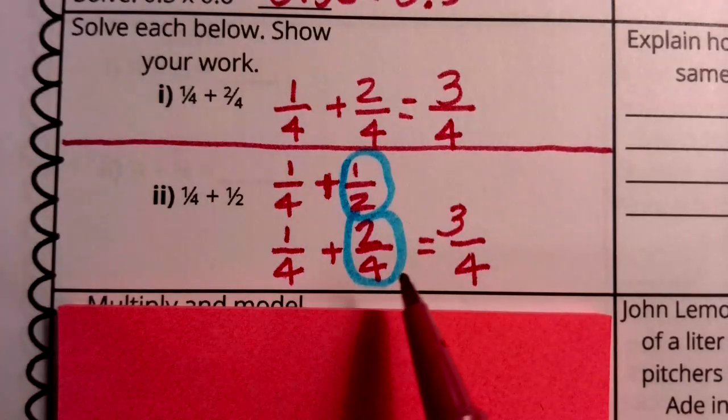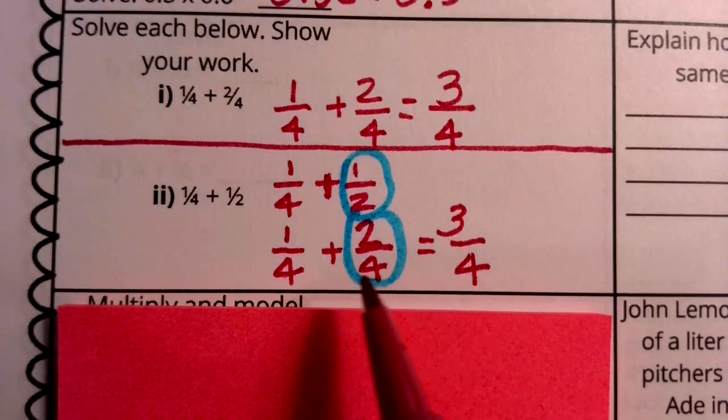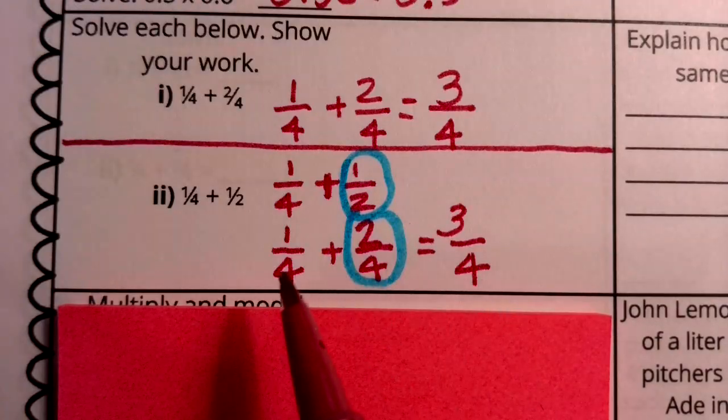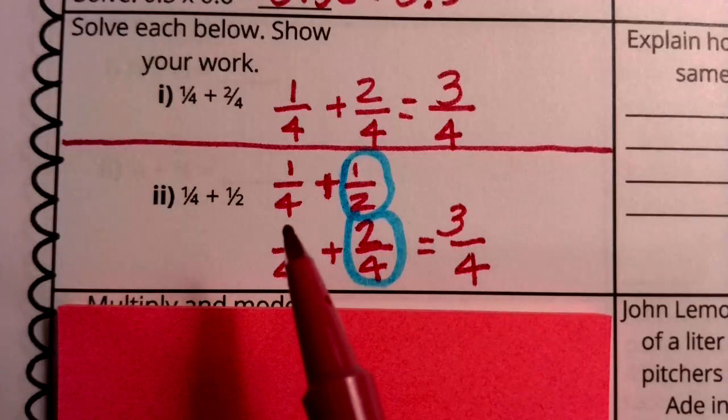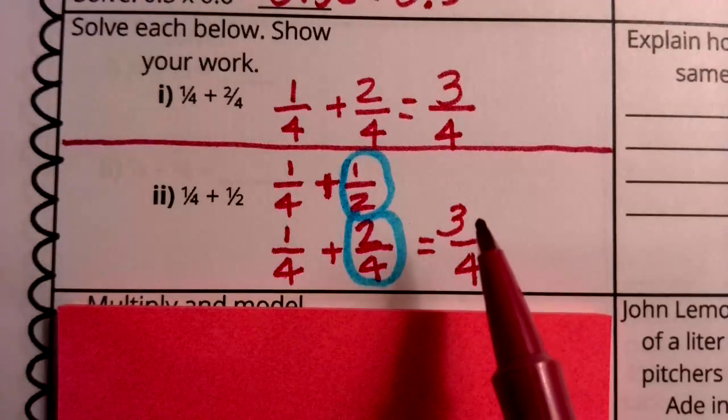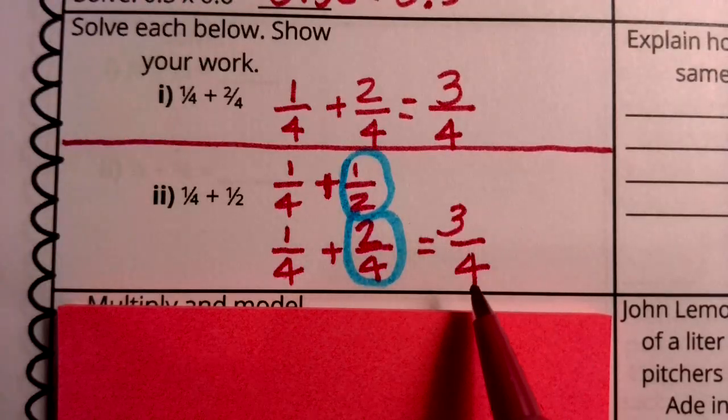but we have one half and that equals two fourths. But now I've converted this into a problem that I can solve because look, those denominators are now the same. So I can carry my four over here to my answer. And I can say one plus two equals three.